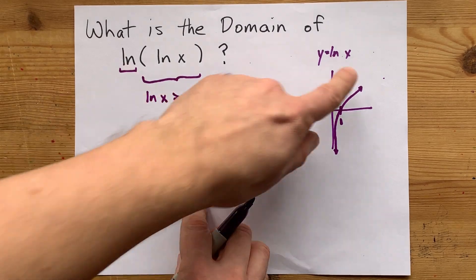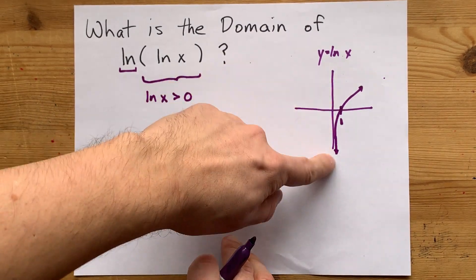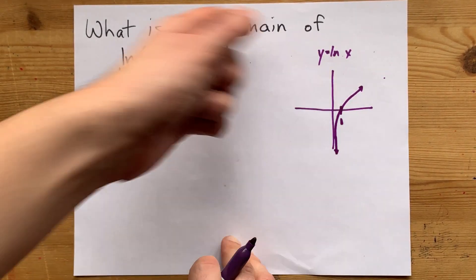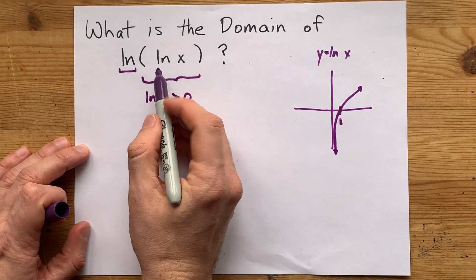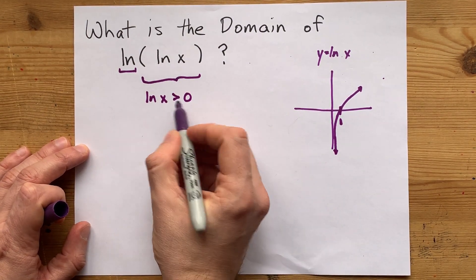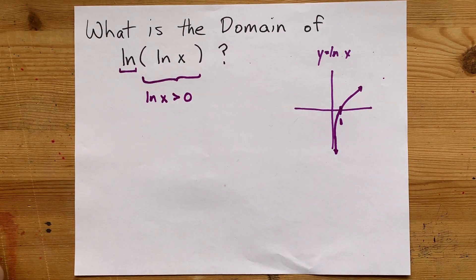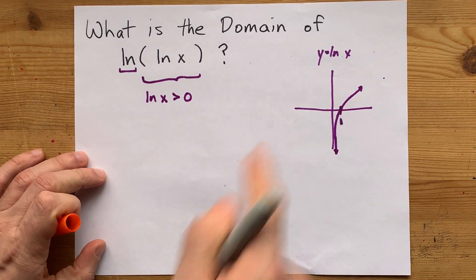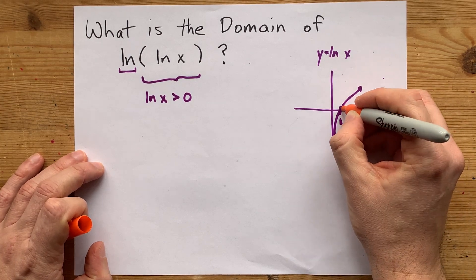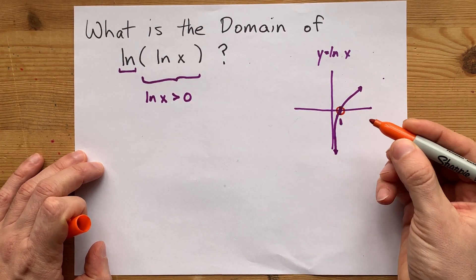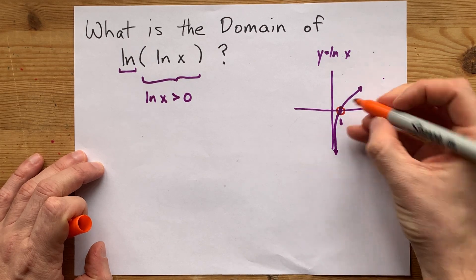So now what we actually want is for the ln of a number to be bigger than 0. Taking a look at this same graph, you're only going to get numbers that are bigger than 0 starting at 1, but not including 1, and higher.